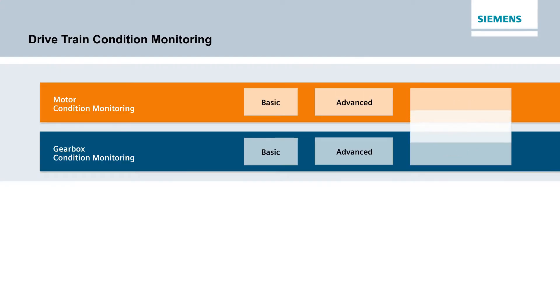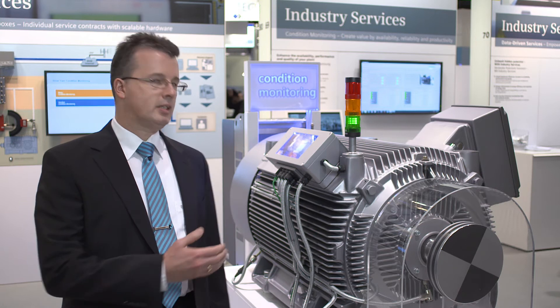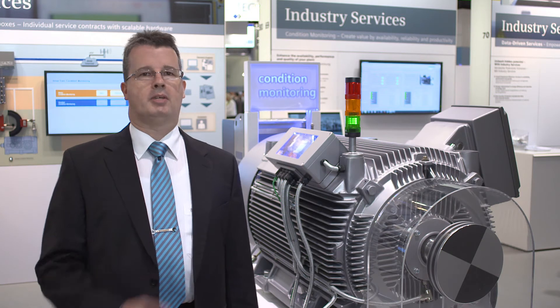With drivetrain condition monitoring, Siemens offers a diagnostics tool which covers all requirements. The configuration, installation and component-specific parameterization of the drivetrain condition monitoring system is drive-related. This is the only way to implement a consistent monitoring system effectively.